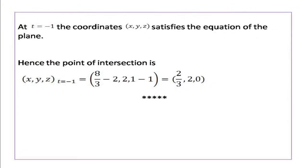So at t = -1 the line intersects the plane. To find the coordinates of the point of intersection, put t = -1 into the equations for x, y and z. At t = -1: x = 8/3 - 2 = 2/3, y = -2(-1) = 2, z = 1 + (-1) = 0. So the point of intersection of the line and plane is (2/3, 2, 0).